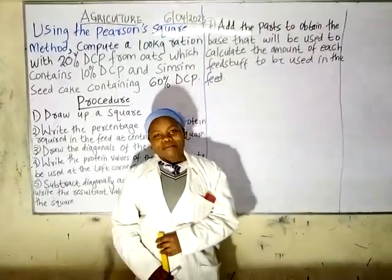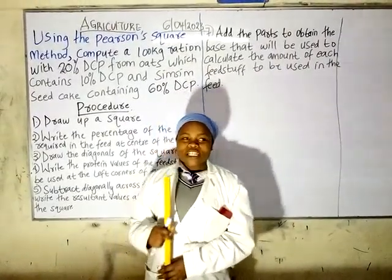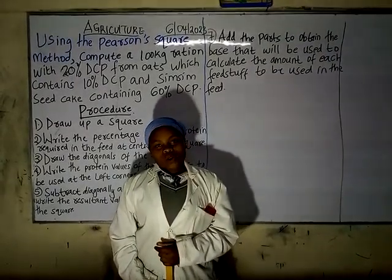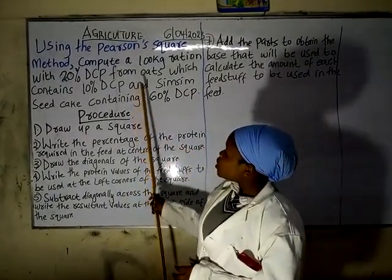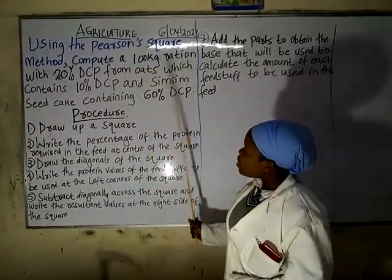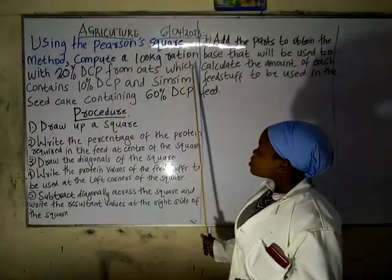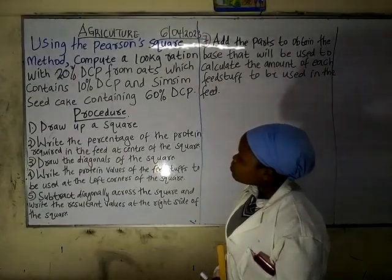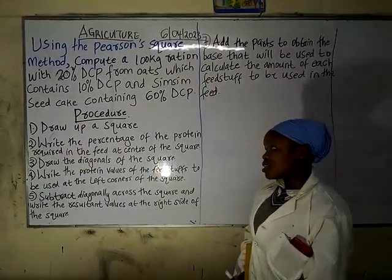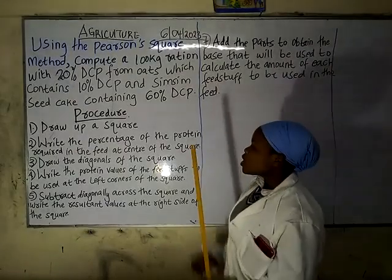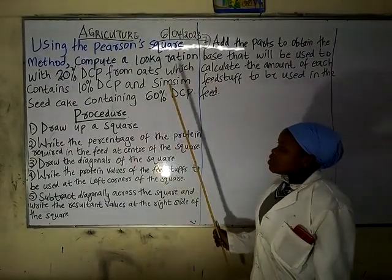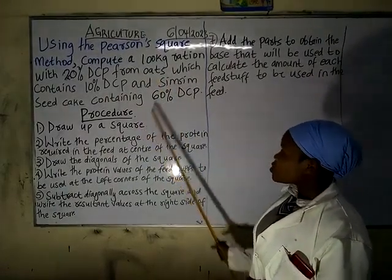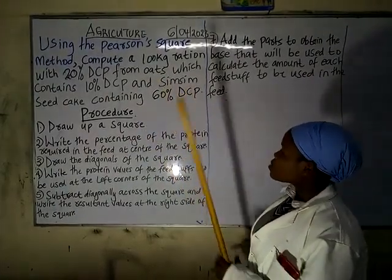Good evening everyone, I'm Teacher Mary. I'm going to take you through agriculture on the topic known as feed and food stuffs. We are going to start with this question: using the Pearson square method, compute a 100 gram ratio with 20 percent DCP from oats which contains 10 percent DCP, and simsim seed cake containing 60 percent DCP. You need to follow the following procedure to tackle this question.